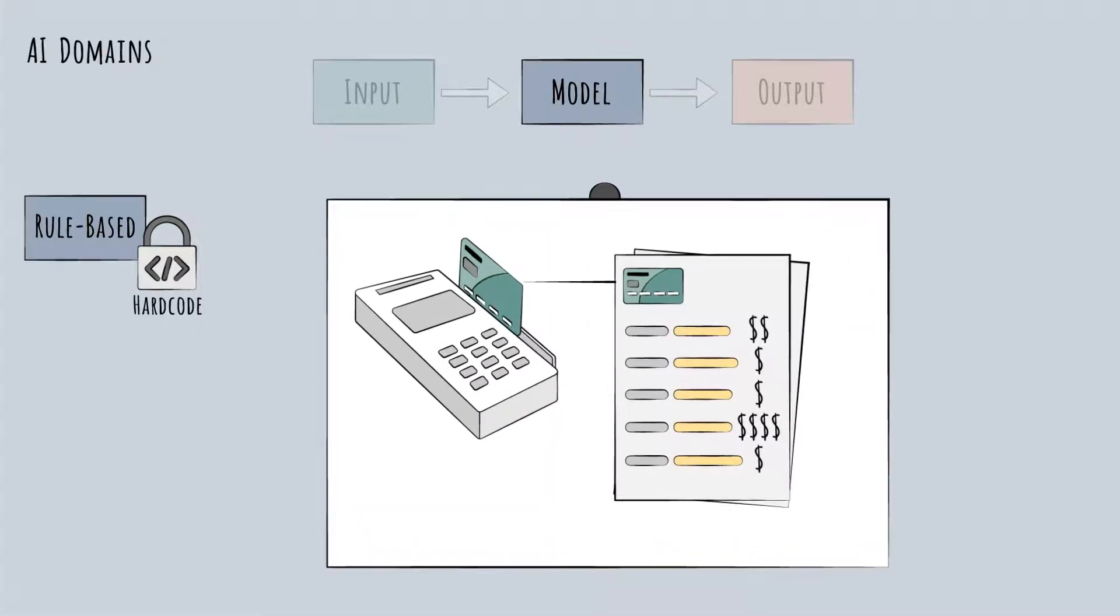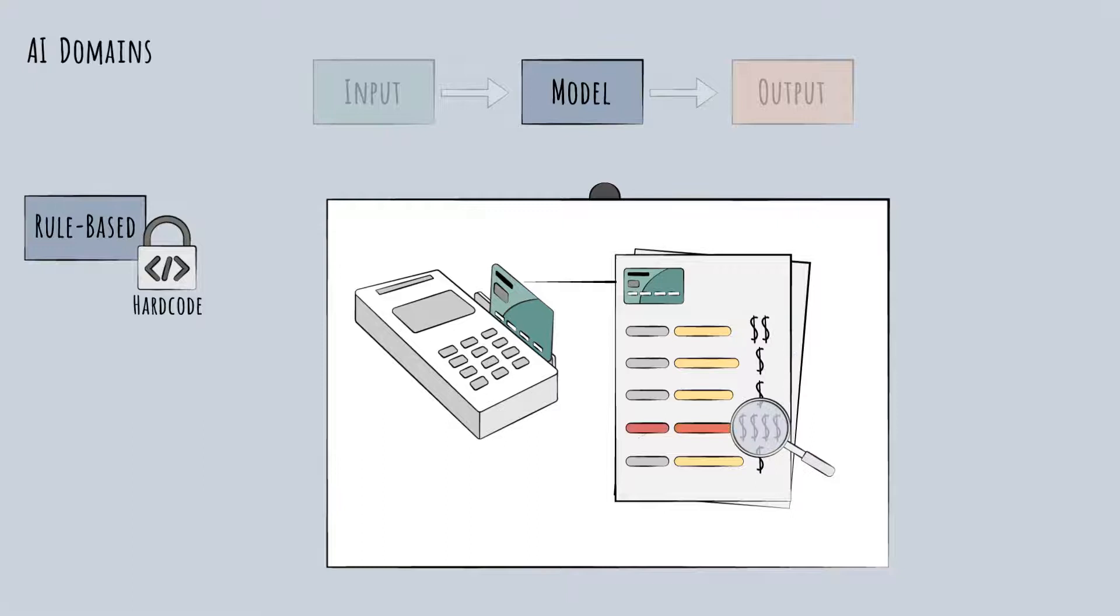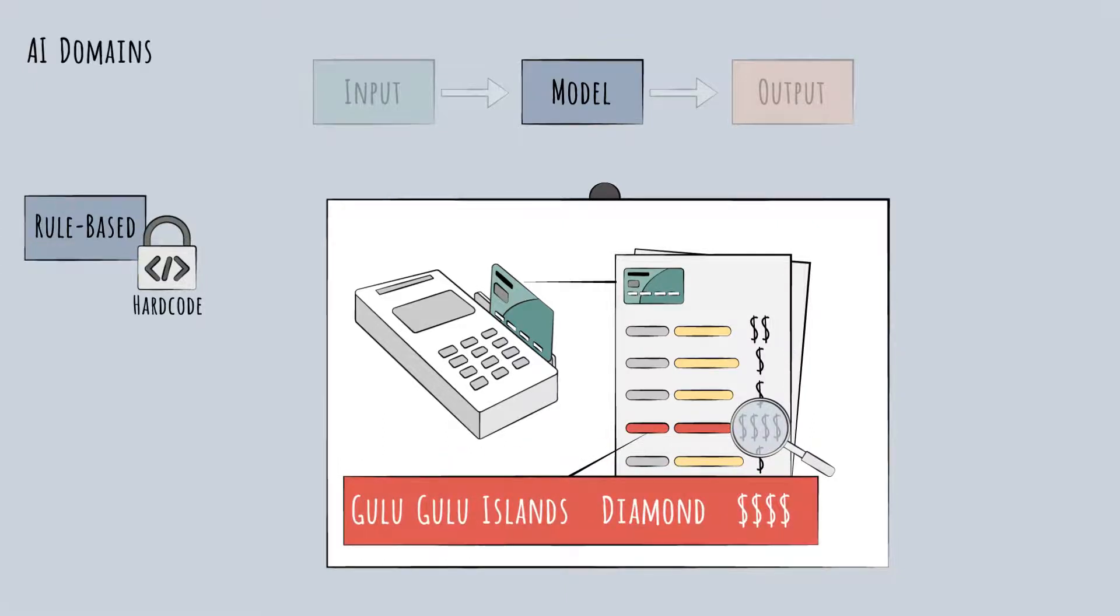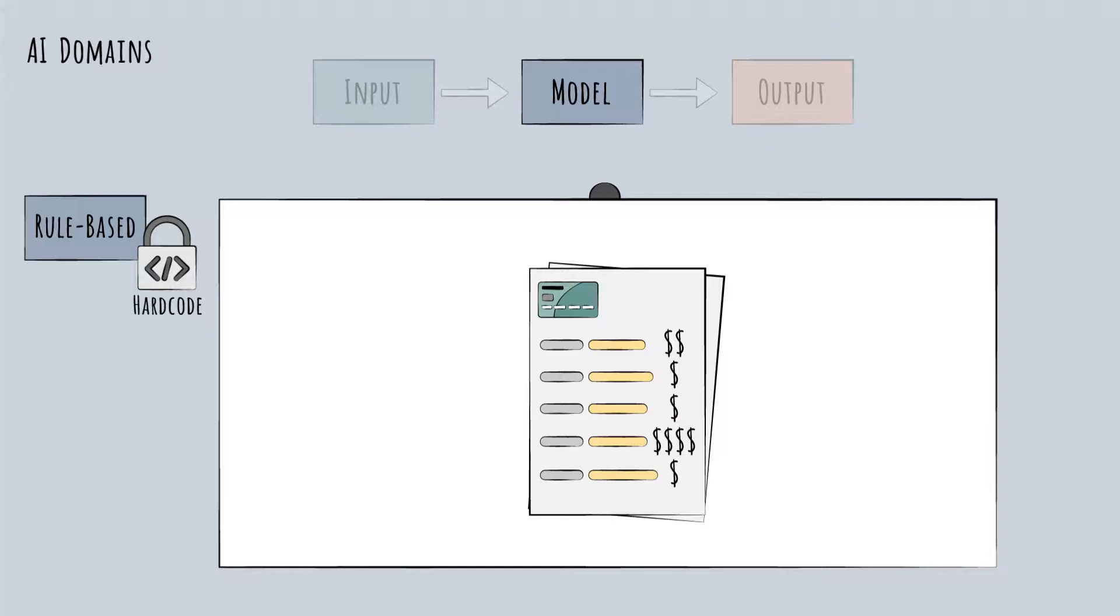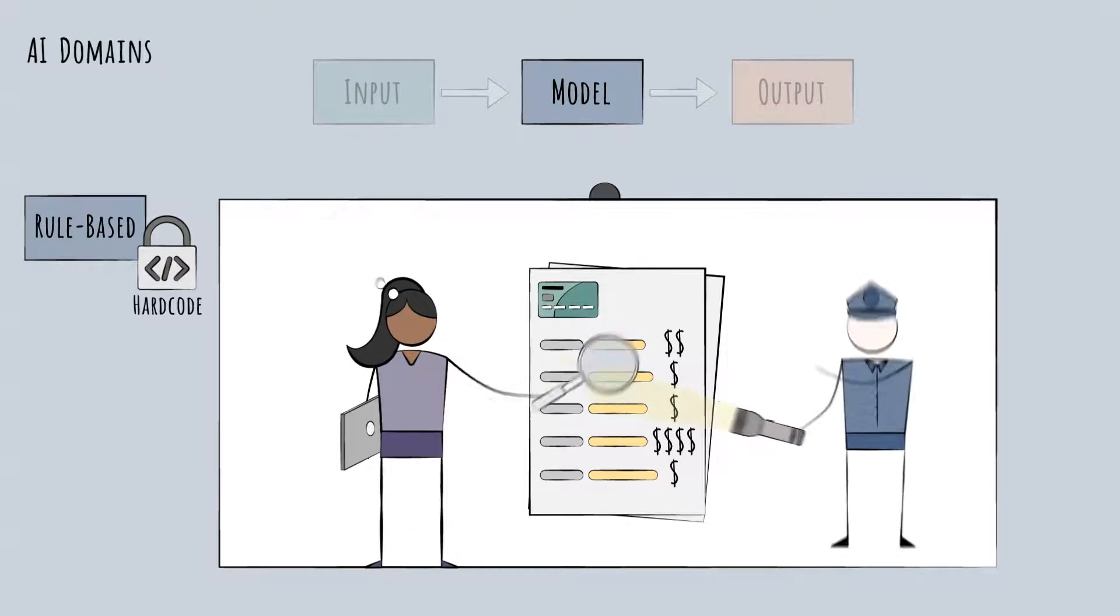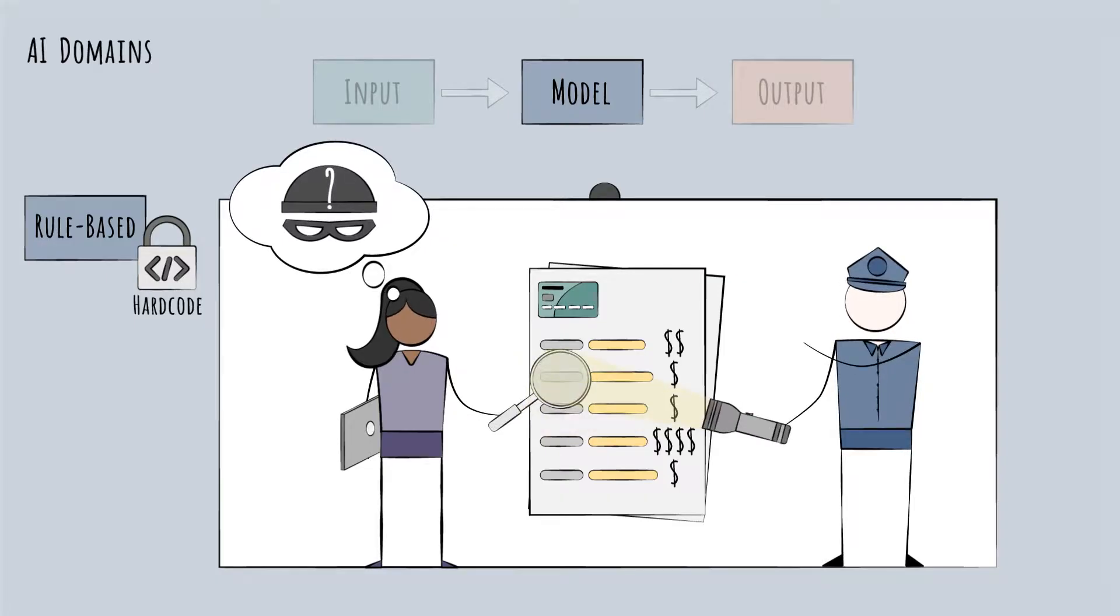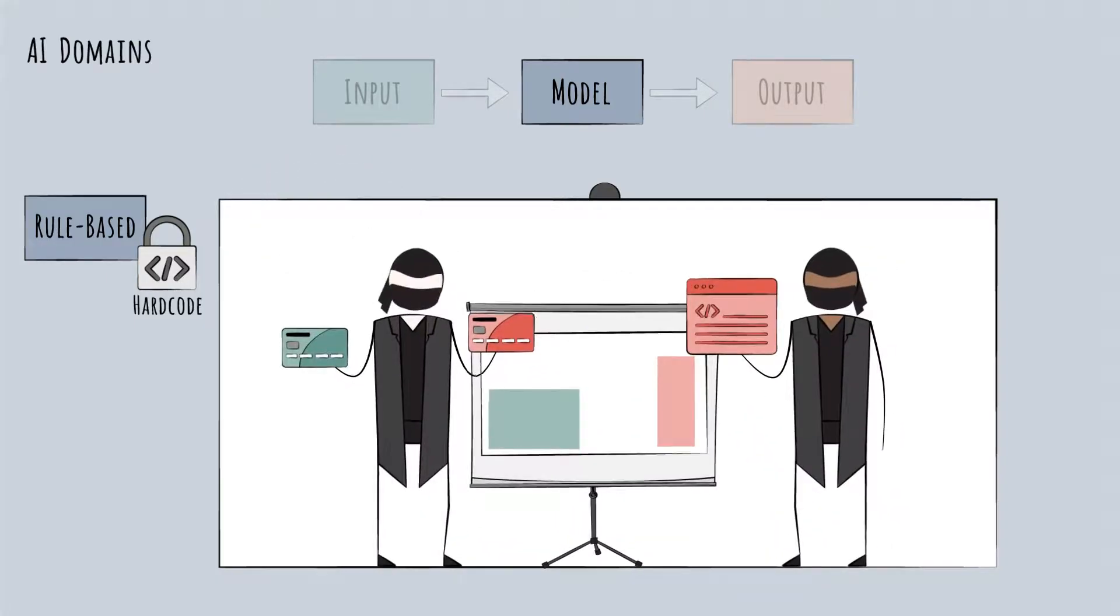This type of model could be used, for example, to detect fraud in credit card transactions. If certain characteristics are detected, then mark fraud. However, there's a big limitation to this. Human developers must know the rules. What does determine fraud, really? Fraudsters are constantly changing tactics. Detecting their patterns means following a moving target.